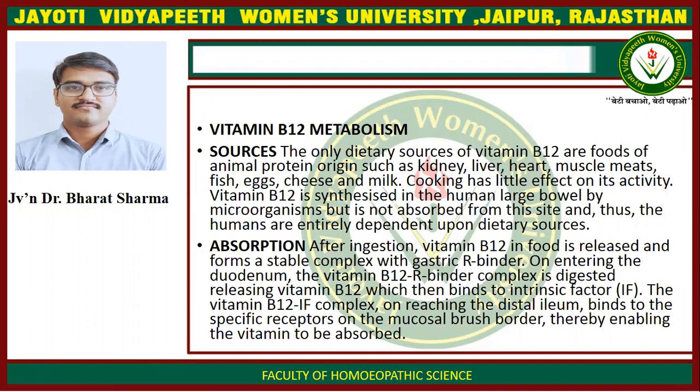Absorption: After ingestion, vitamin B12 in food is released and forms a stable complex with gastric R binder. On entering the duodenum, the vitamin B12-R binder complex is digested, releasing vitamin B12 which then binds to intrinsic factor. The vitamin B12-intrinsic factor complex, on reaching the distal ileum, binds to the specific receptor on the mucosal brush border, thereby enabling the vitamin to be absorbed.